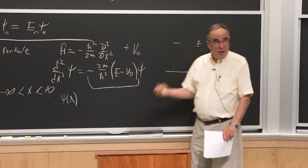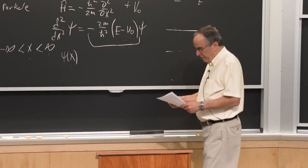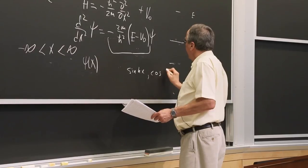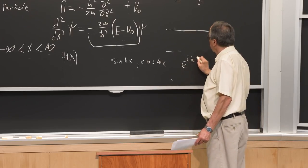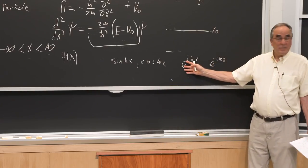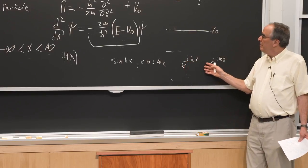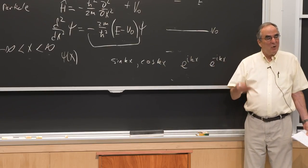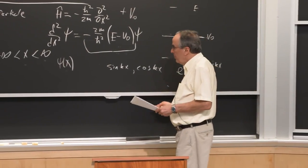From our experience with this kind of differential equation, the solutions have the form sine(kx) and cosine(kx). But we choose instead to use e^(ikx) and e^(-ikx), because cosine(kx) = ½(e^(ikx) + e^(-ikx)), and these exponential functions are more convenient, more memorable, and all integrals and derivatives are trivial.